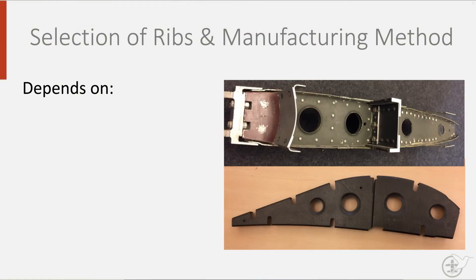As always, when designing things, there is not one final correct answer. The type of rib — closed, with lightning holes, or truss shaped, to name but a few options — depends on the loads it has to carry.